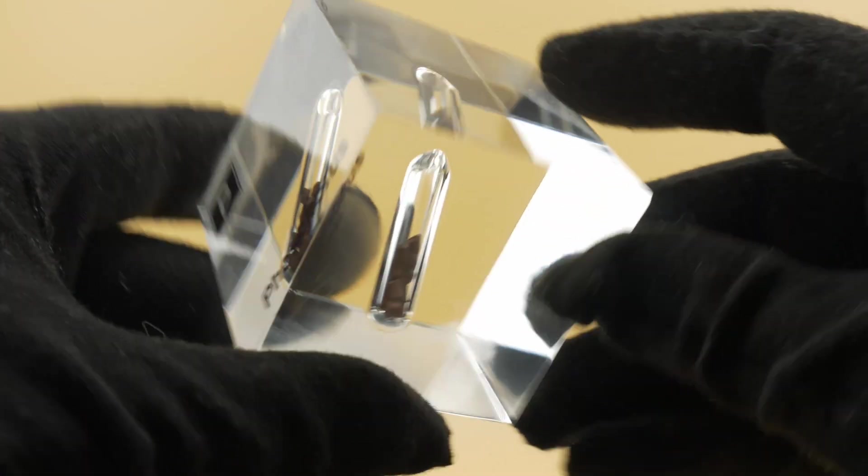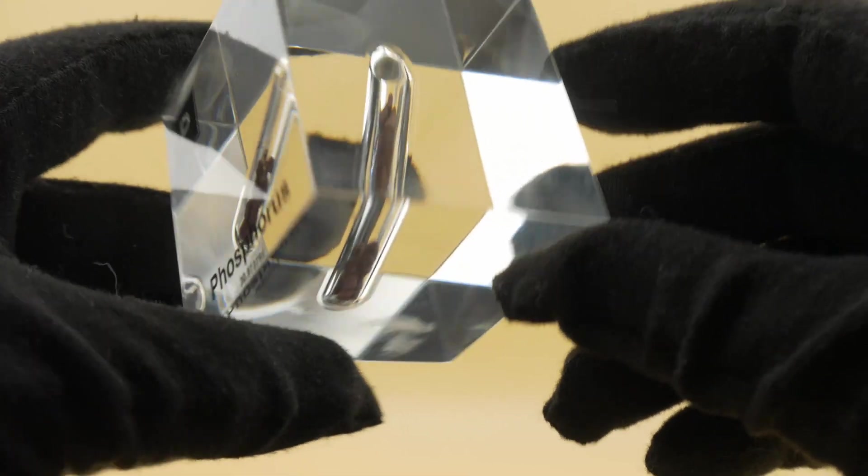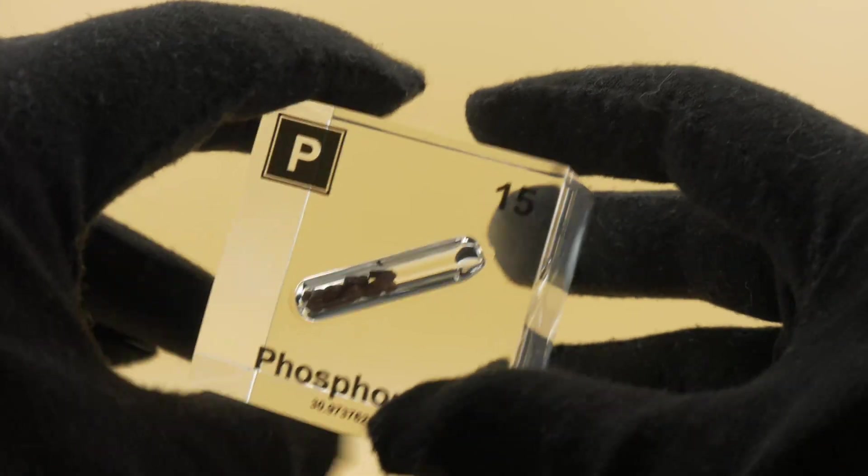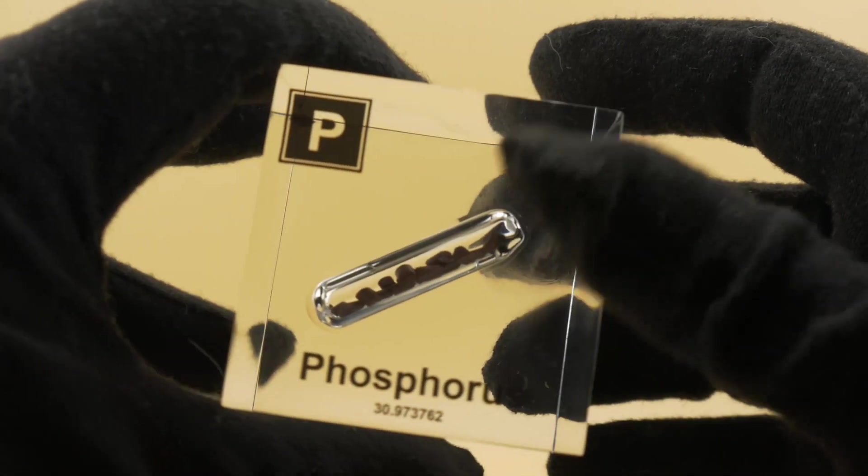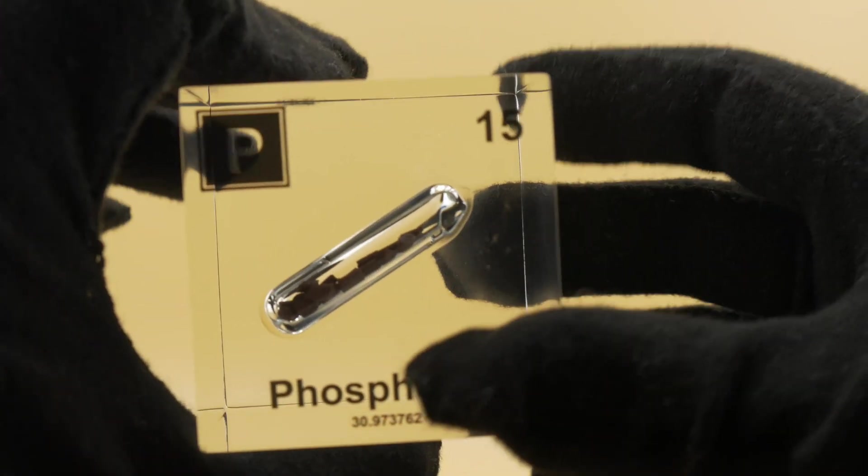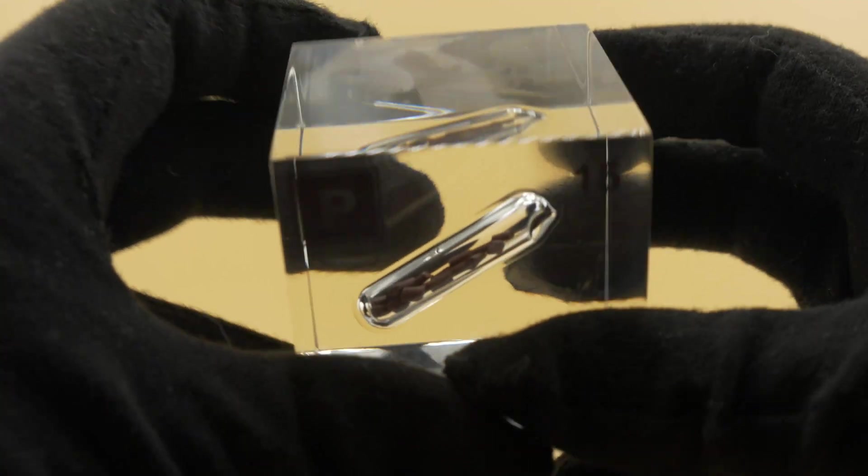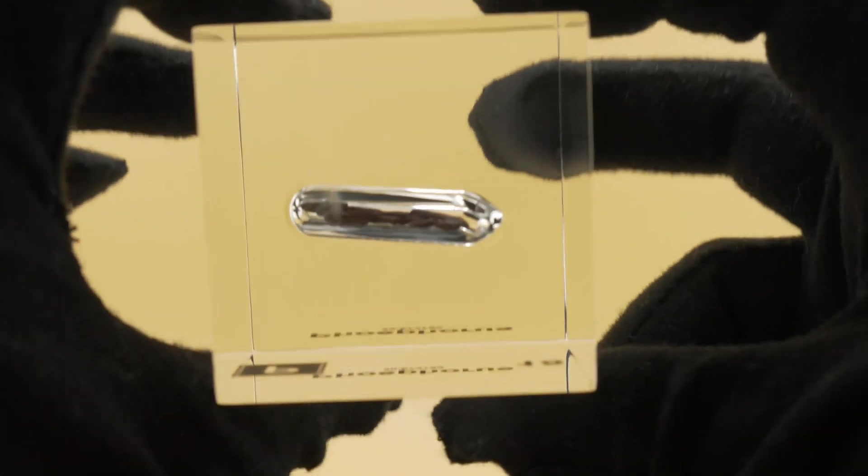Now the name phosphorus originates from the Greek word phosphorus meaning light bringer or light bearer. This term aptly describes the element's glowing characteristic which made it seem almost magical to early observers.